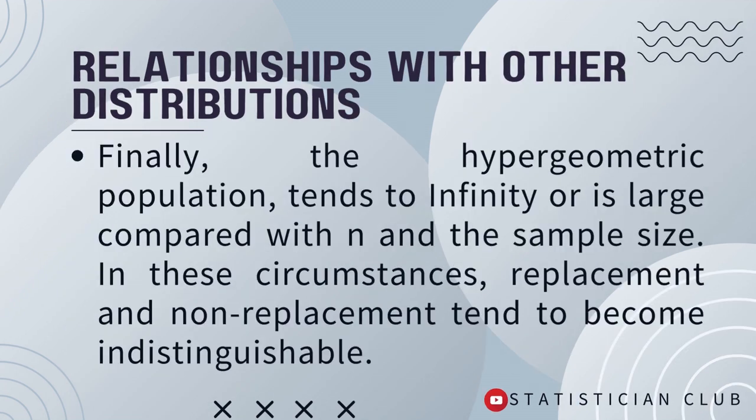Finally, when the hypergeometric population tends to infinity, or is large compared with n — where n is the sample size — in these circumstances, replacement and non-replacement tend to be indistinguishable.